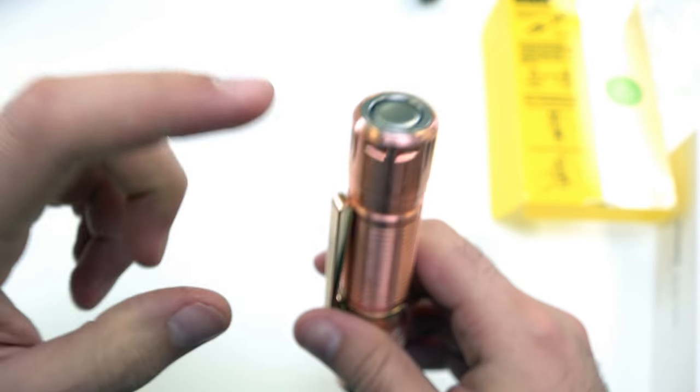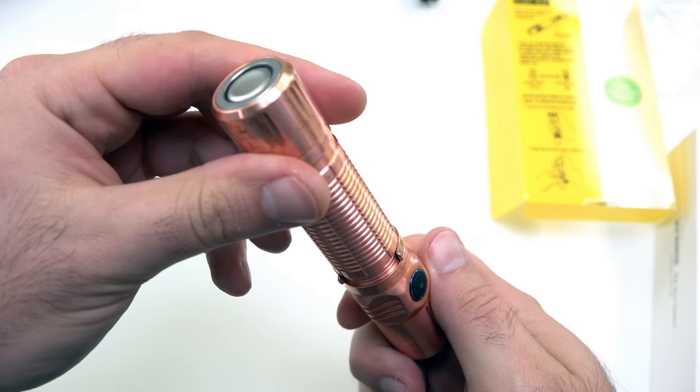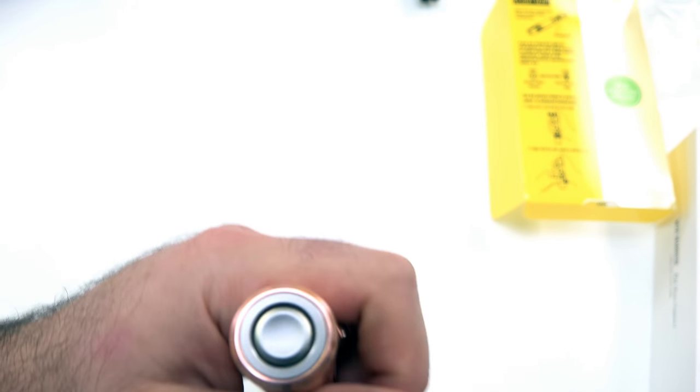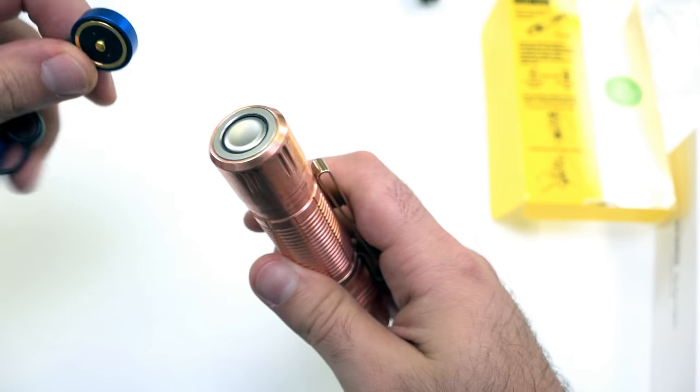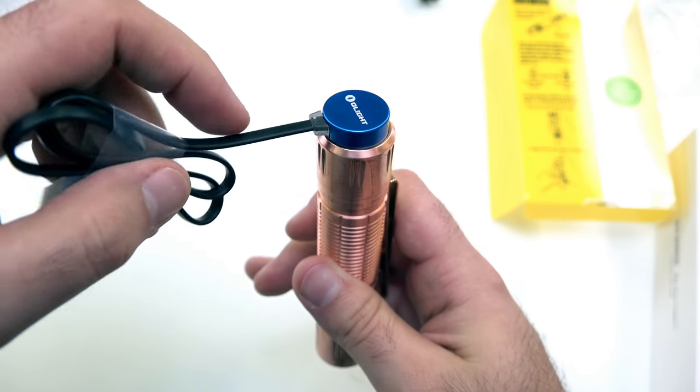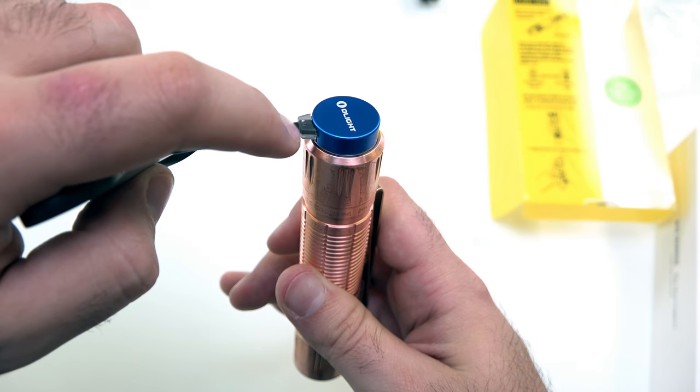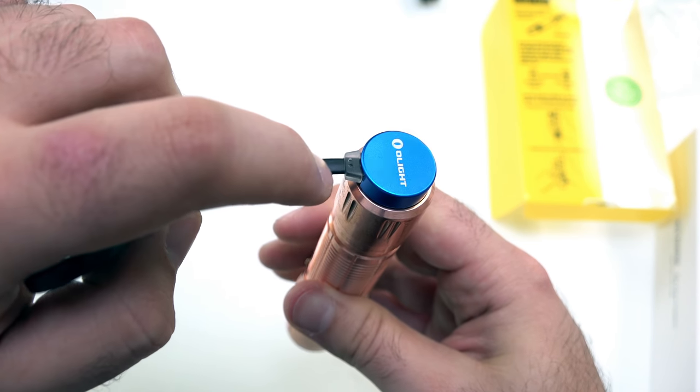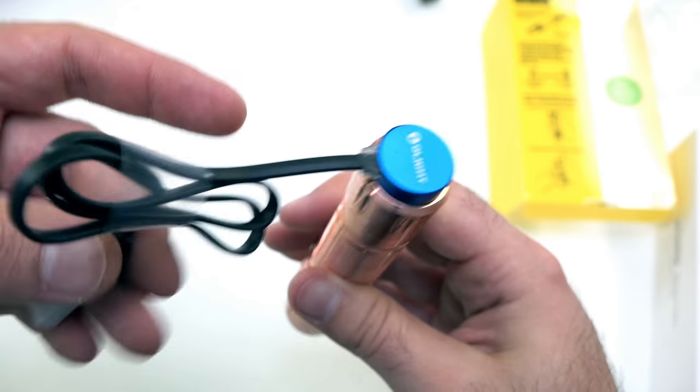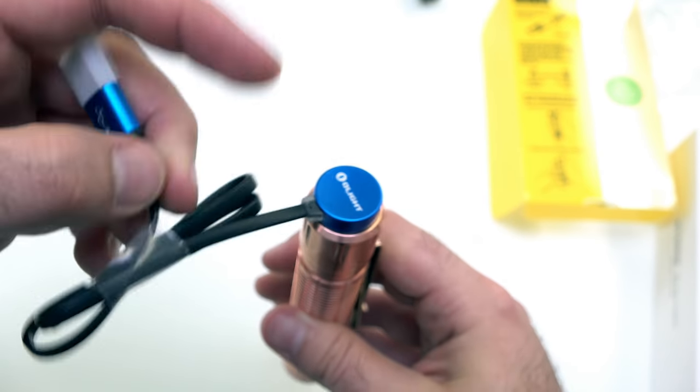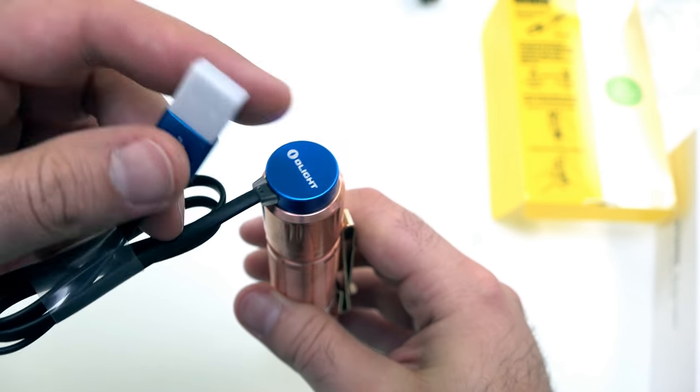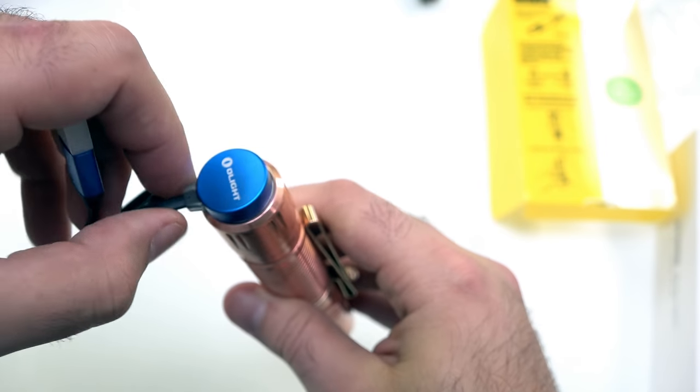If you're familiar with the M2R tail switch, what's really cool about it is first of all you can charge from it. We'll just pop this on, there's a little indicator right here on the charging cable. It'll be red and then go to green once the light is fully charged. It's USB, you can plug this into anything, your iPhone, iPad charger, whatever.